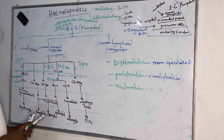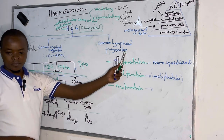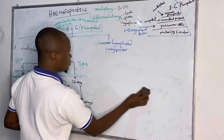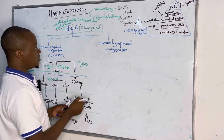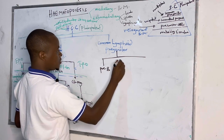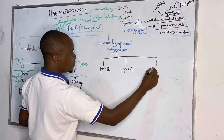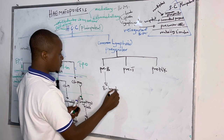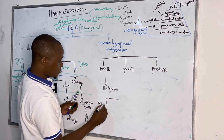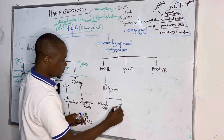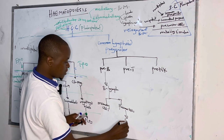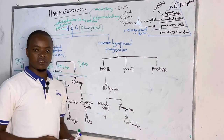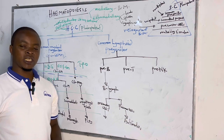From the common lymphoid progenitor, it gives rise to pre-B, pre-T, and pre-natural killer cells. The pre-B gives rise to B lymphocytes, which proliferate into memory cells and plasma cells. Plasma cells produce antibodies or immunoglobulins. The memory cells are responsible for secondary immunity — when the body remembers how to fight a disease it has previously encountered.